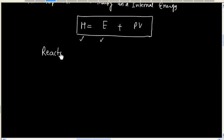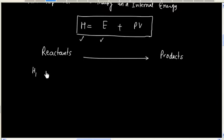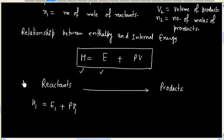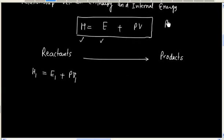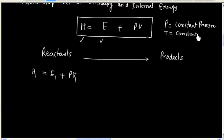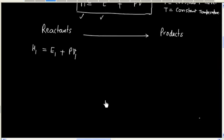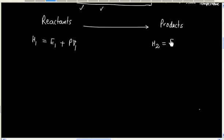For reactants, we write H1 = E1 + PV1, where P is the constant pressure and T is the constant temperature. For products, we write H2 = E2 + PV2, since volume is V2, internal energy is E2, and enthalpy is H2.